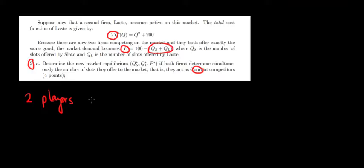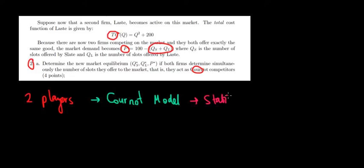We have here the Cournot model. This is a static game theory. Why is it static? It's static because the firms decide simultaneously — that is the keyword. Simultaneously means at the same time.